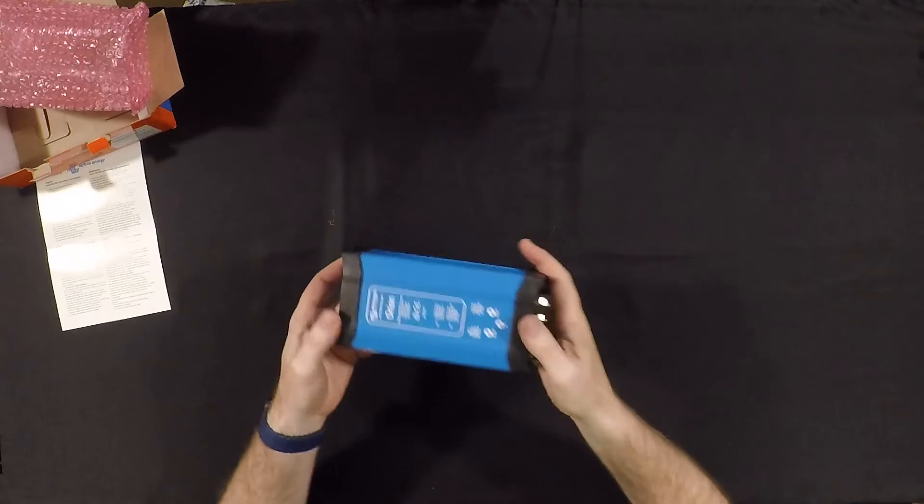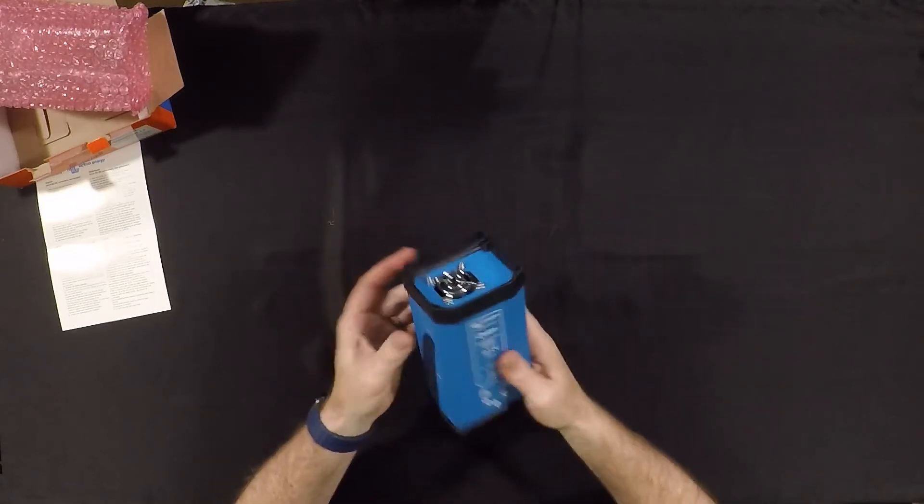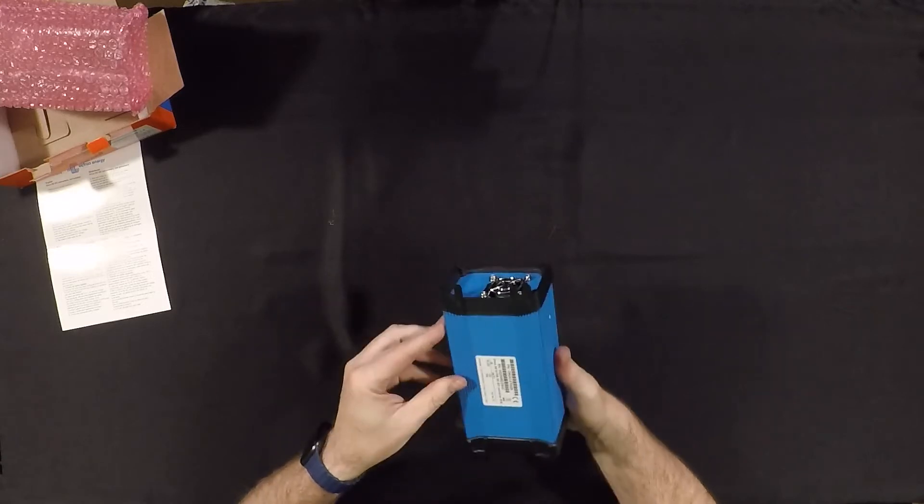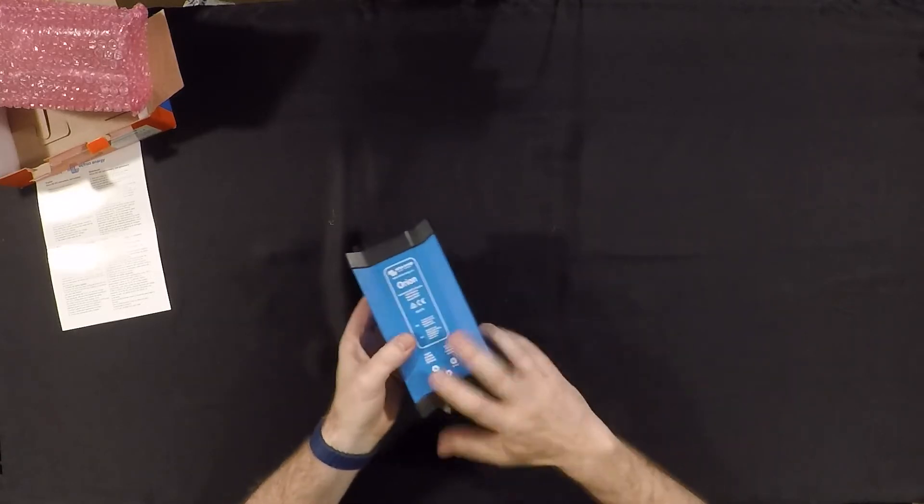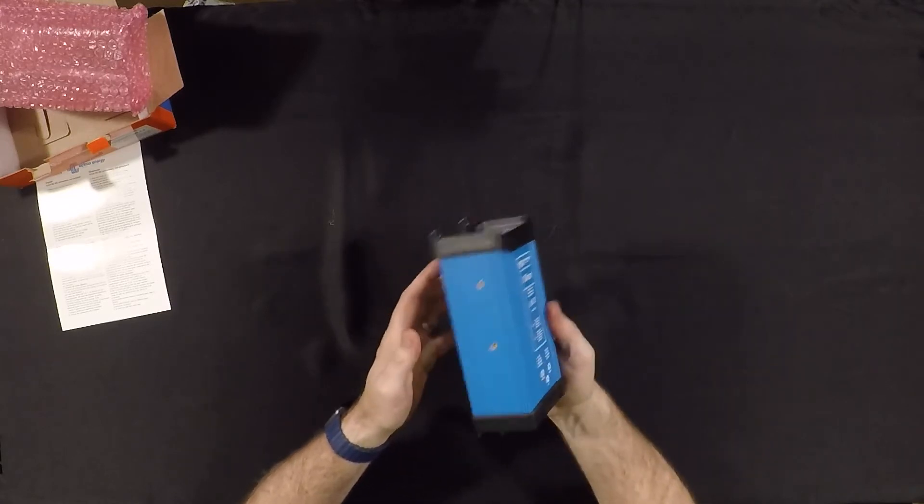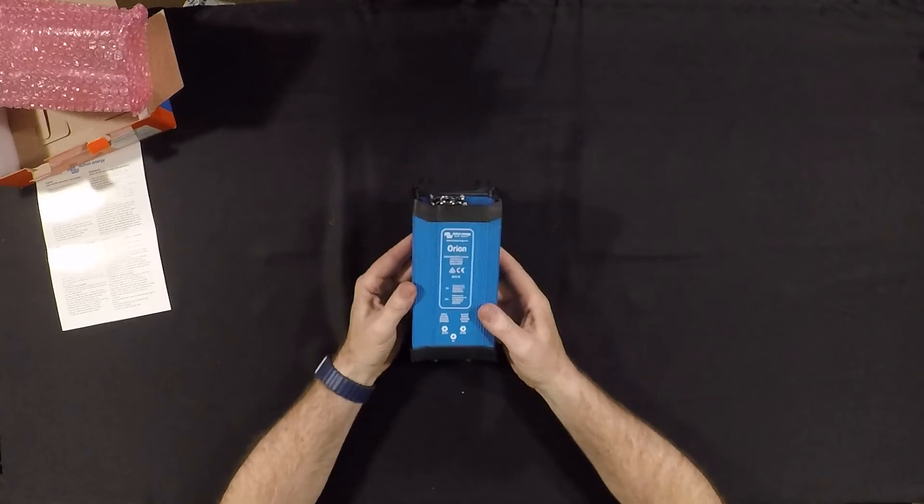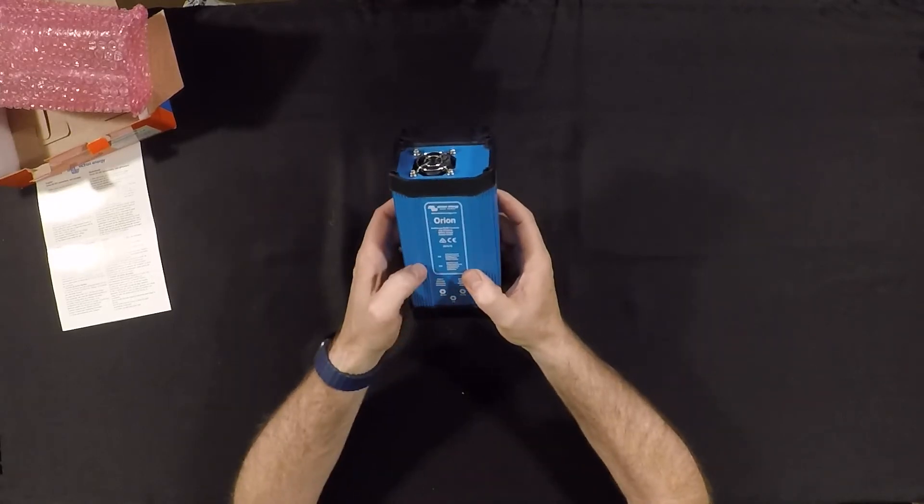Which is generally a good sign when you get electrical components, especially things that are doing conversion and inversion. You want to have a lot of copper in there in the coils to do that, and so it's nice to have something with heft. So this particular unit, again, it's a 24/12-70, meaning it goes from 24 volts...